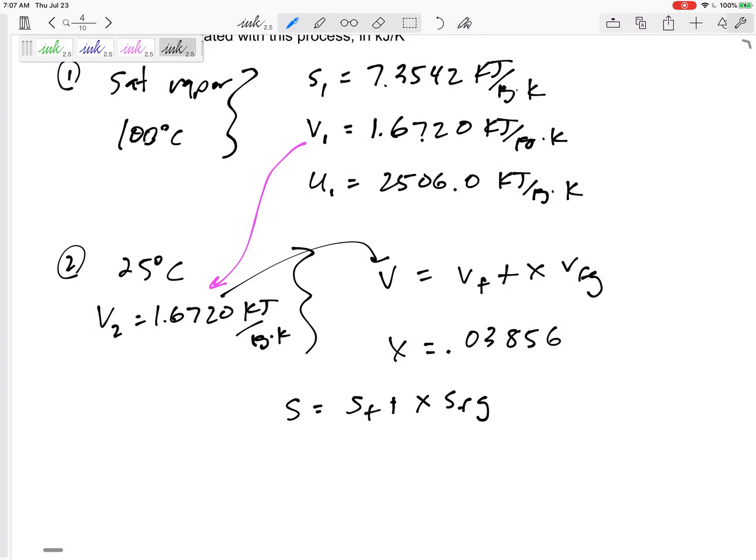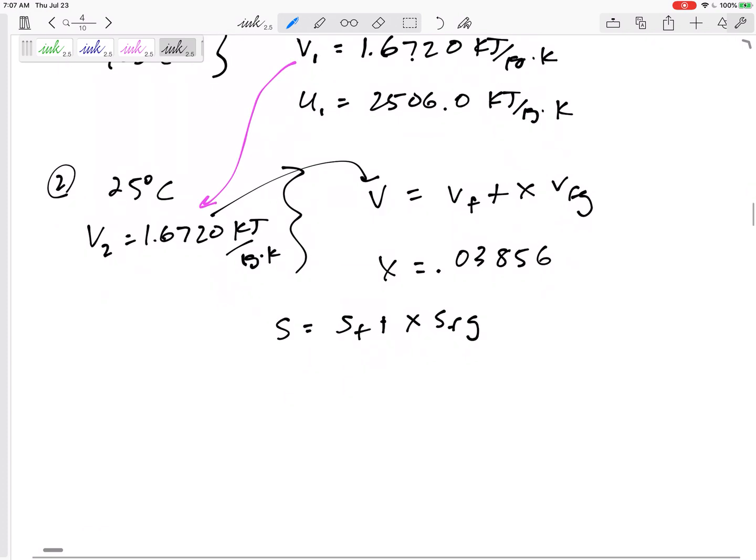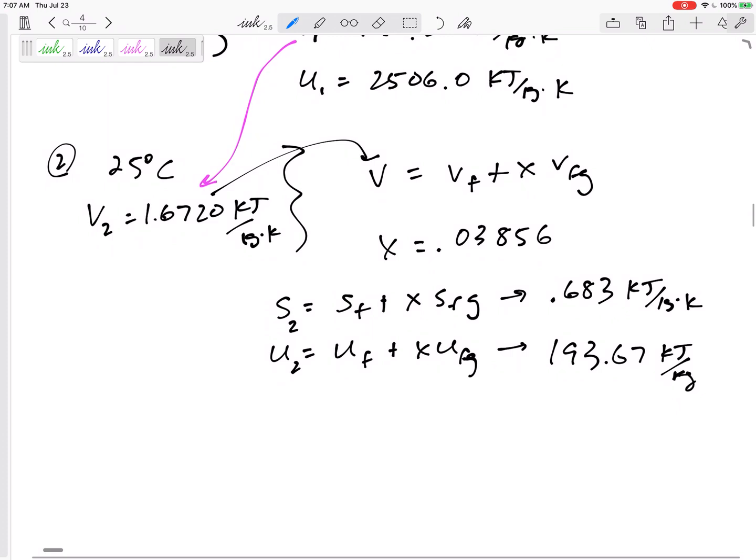So once I've got that x, then I can find the entropy. I can find S: S equals Sf plus x times Sfg. I could also find U: Uf plus x times Ufg. I'm skipping the details - you can't skip the details - but have your property tables, be comfortable with your property tables, don't forget about quality, calculating quality, using quality.